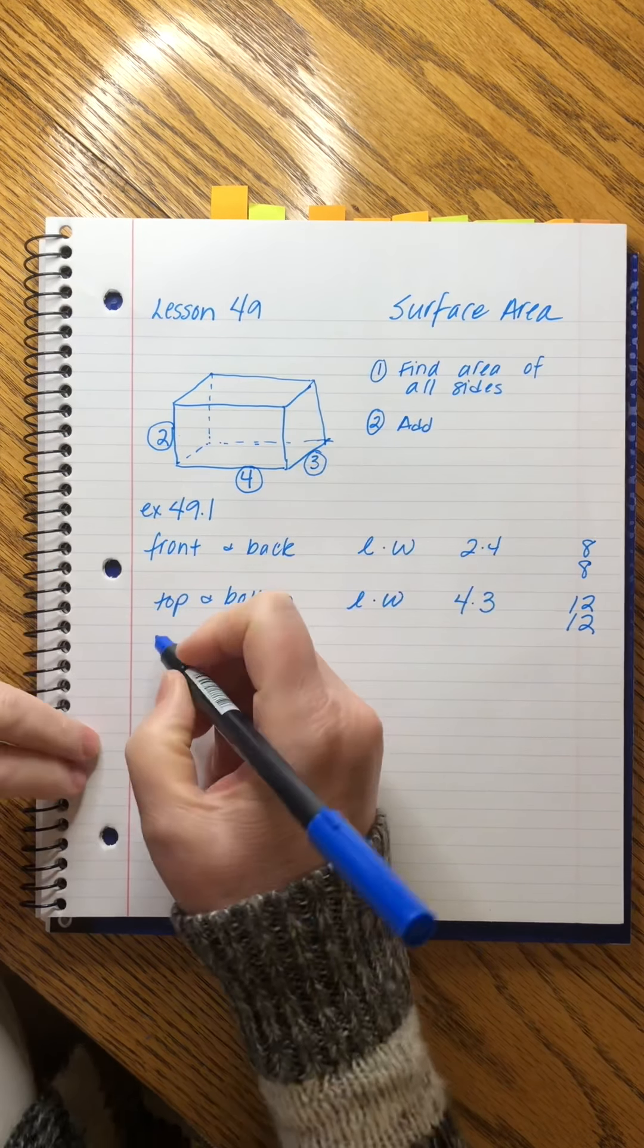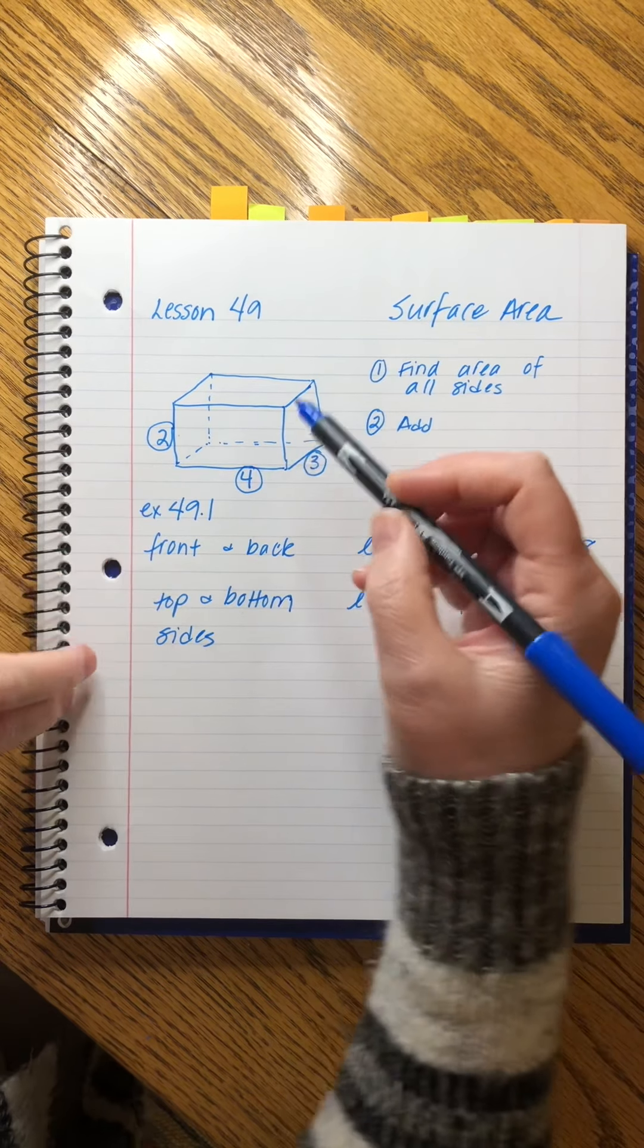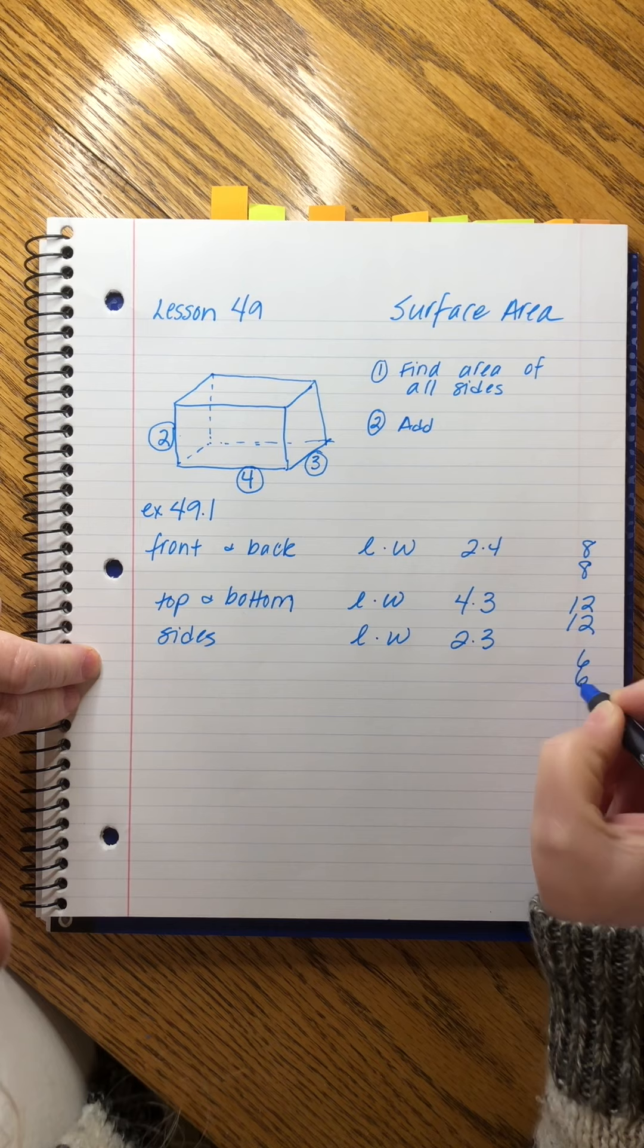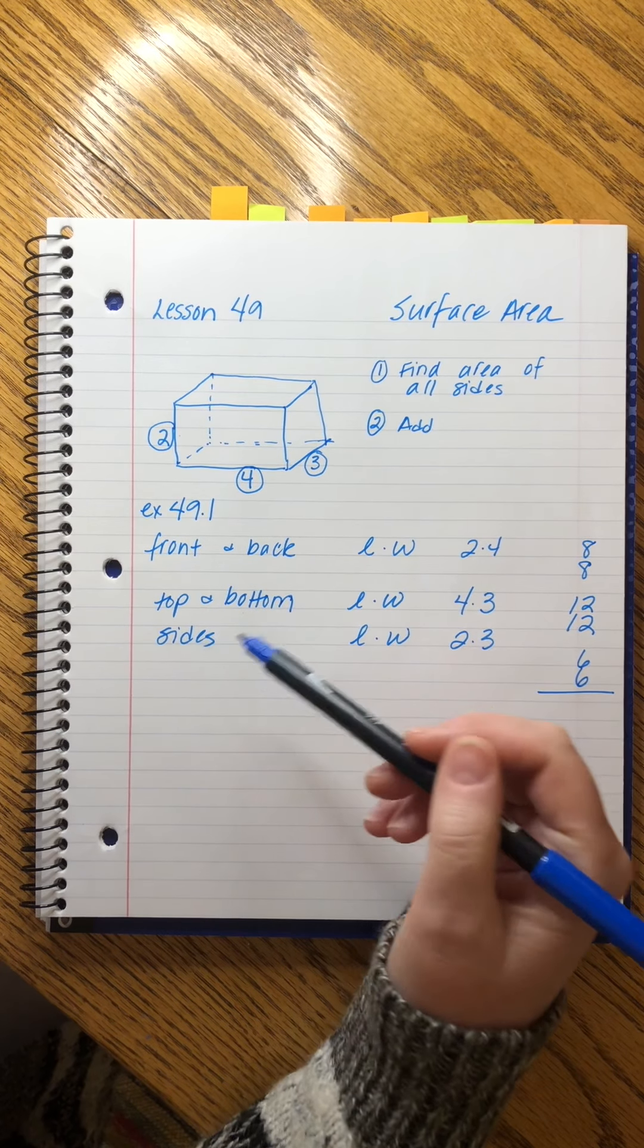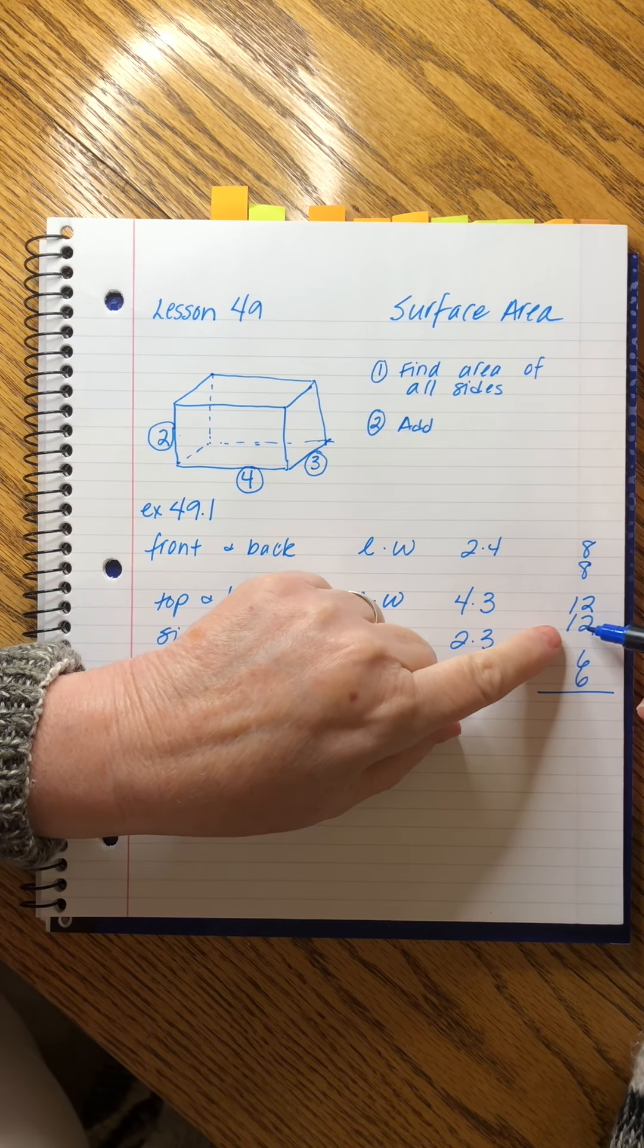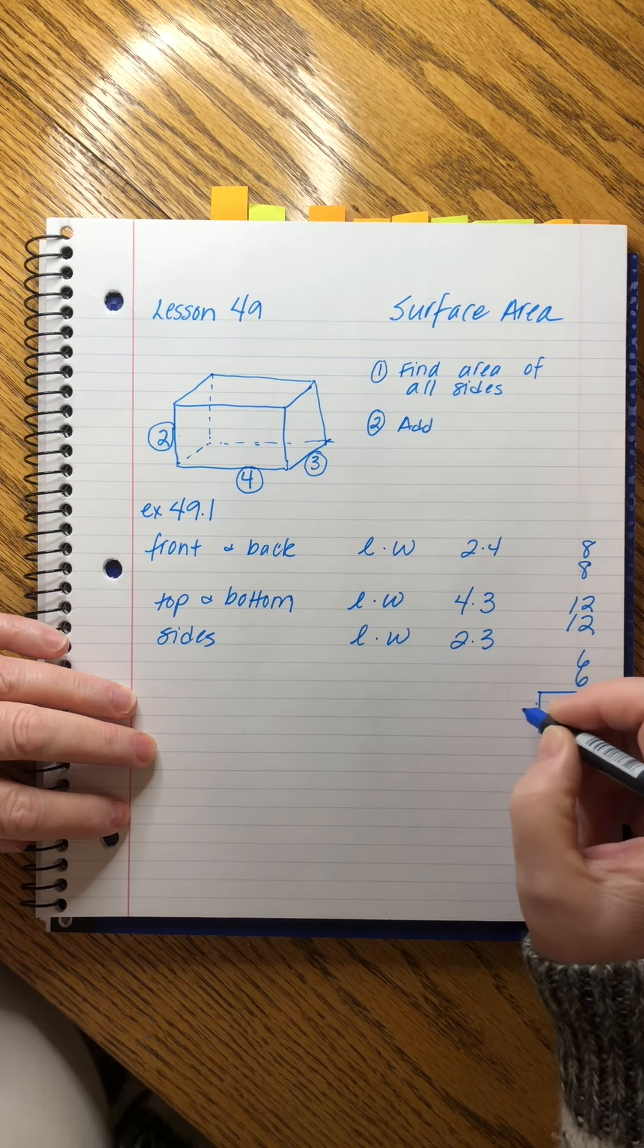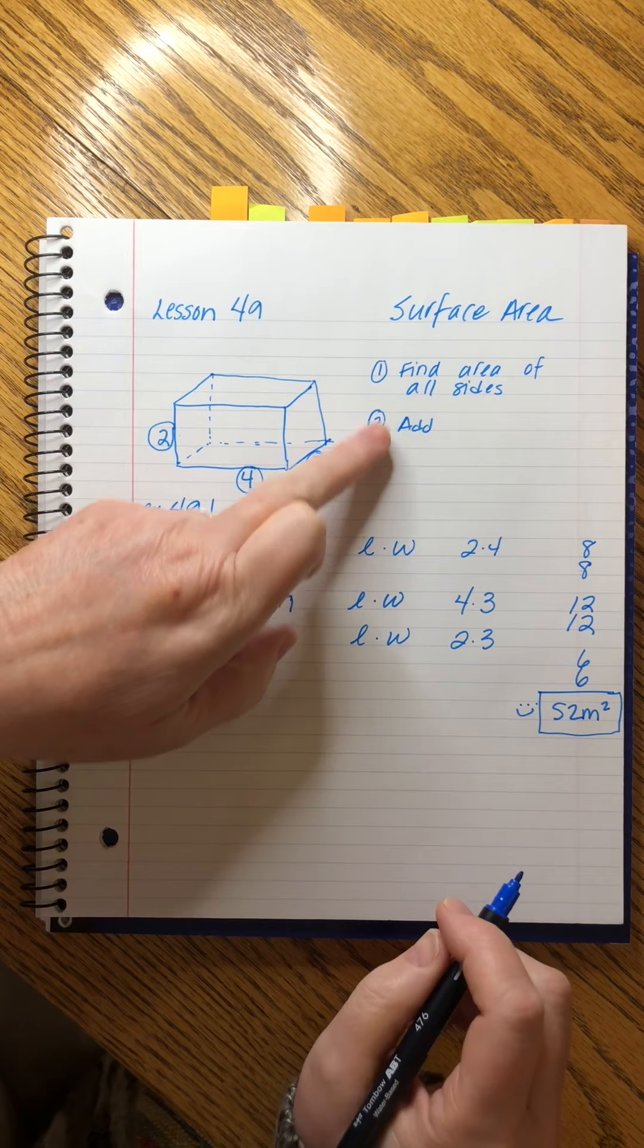And then now we have these little sides—there are two of those, so we'll write it down twice. This dimension is 2 and this dimension is 3. Again, it's length times width: 2 times 3. So now we have found the area of all of the sides—there are six sides: one, two, three, four, five, six. We add them all up. I see these make pairs of 20, so that's 40, plus 12 more is 52. And I look for my unit—it's meters—and surface area is always squared. Yay!